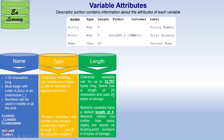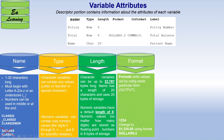The third attribute is length. A character variable can be up to 32,767 bytes long — for example, the 'name' variable with a length of 20 uses 20 bytes of storage. A numeric variable has a default length of 8 bytes, stored as floating point numbers. The length can be changed if needed.